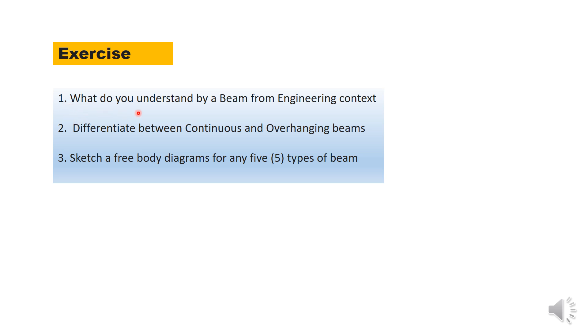Number one, what do you understand by beam from engineering context? You need to give me accurate definition of beam in your own terms. And you need to differentiate between continuous beam and overhanging beam. The next thing you will be doing is produce sketches for any five types of beams. As any of the beams that you want to sketch, we need you to sketch the free body diagrams using your knowledge from supports: pin support, roller, fixed ended beam. So I would like you to do five and show us in the next class.